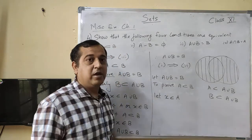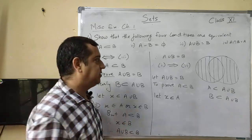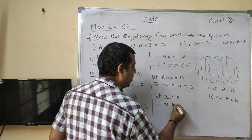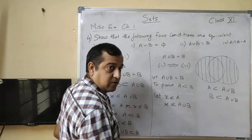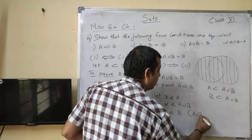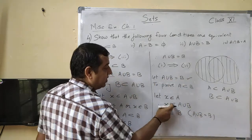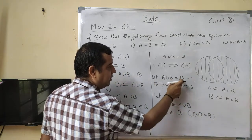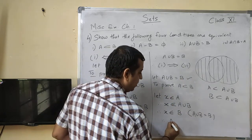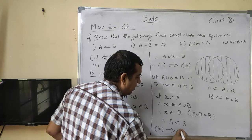हमने X कहाँ लिया? A में. अब A ∪ B में किसके elements आते हैं? A के सारे elements और B के भी सारे elements. इसका मतलब X जो A में present है, वो clearly A ∪ B में present है. इसका मतलब X किस में present है? B में. क्यों? क्योंकि यहाँ पे A ∪ B जो है, वो B है — यही हमारा assumption चल रहा है: A ∪ B = B. तो X यदि A ∪ B में present है, इसका मतलब X B में present है. हमने क्या लिया था? X A में present है. Therefore, clearly A ⊆ B.